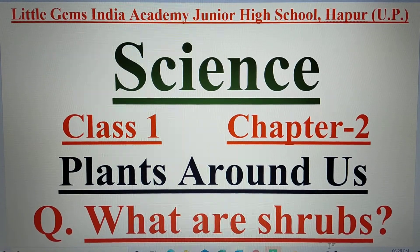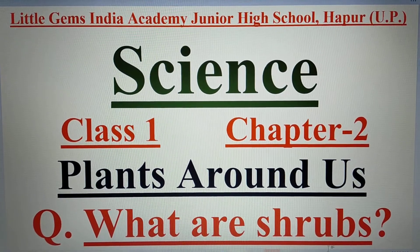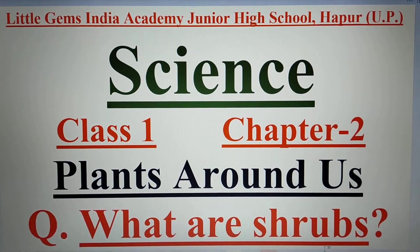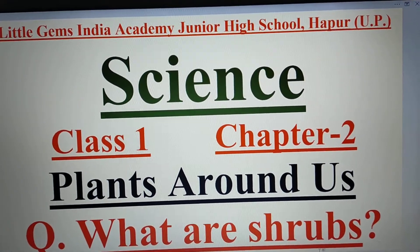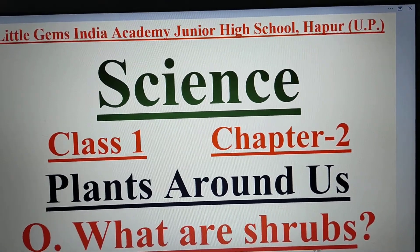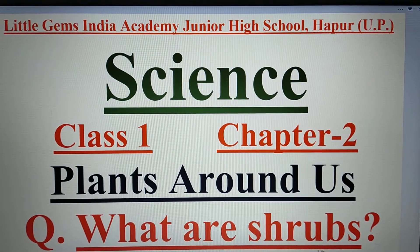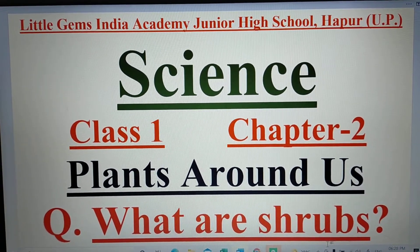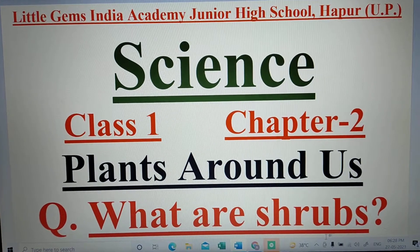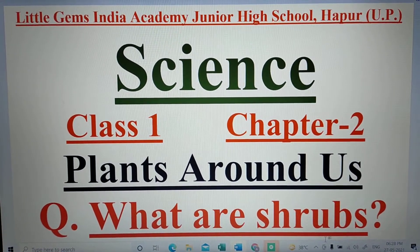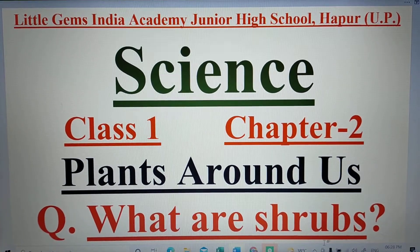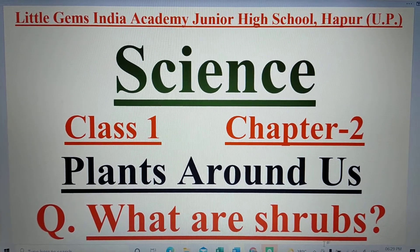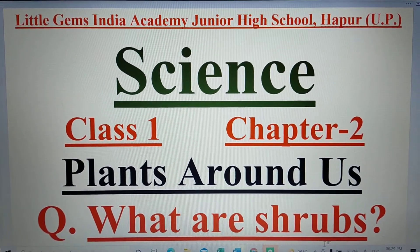Little Gems India Academy, Junior High School, Hapur, Uttar Pradesh, India. Science Class 1, Chapter 2: Plants Around Us. You listened in video number 1421 about types of trees. Now, my littles, let us learn: what are shrubs?